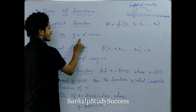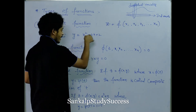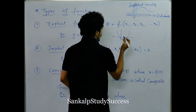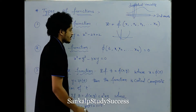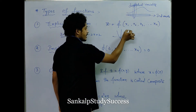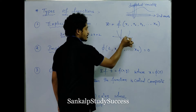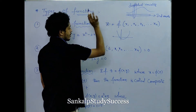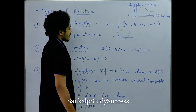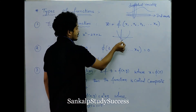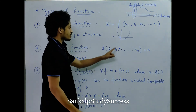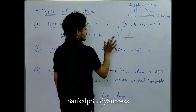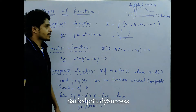For example, y equal to x squared minus 2x plus 2 — that is a parabola format. Suppose this is a parabola. In this particular relation on the x-axis and y-axis there is a function — a parabolic function. There is a relation and a mapping happening here. This type of function is an explicit function.